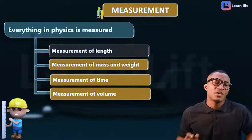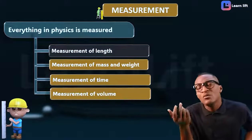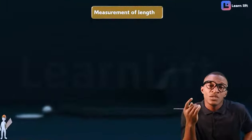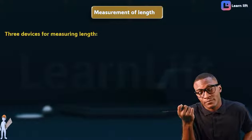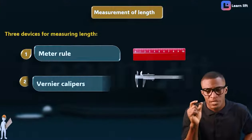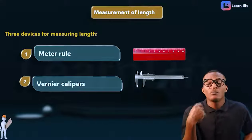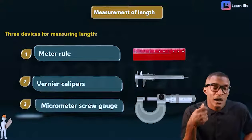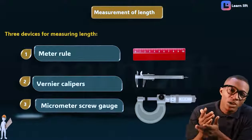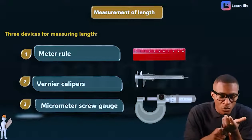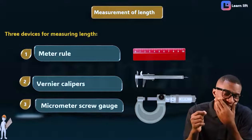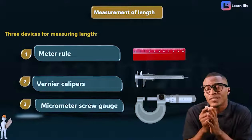Let's start with the first one — measurement of length. How is length measured? There are three ways we can measure length. The first way is using a meter rule. After that, we'll talk about measurement with a Vernier caliper. After that, measurement with a micrometer screw gauge.